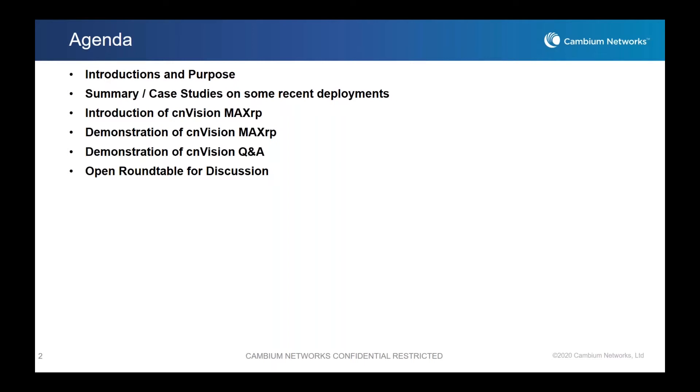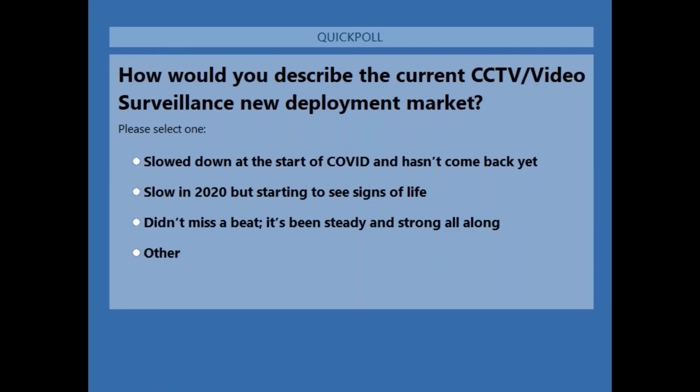I am going to start with a couple of poll questions just to get a sense of where everyone's at. Really trying to understand what your view of the current video surveillance marketplace is. I'd like to see what your thoughts are on how the video surveillance market has been going — doesn't have to be wireless, doesn't have to be CNVision, but in general how things have been going since the beginning of 2020 when COVID and the economy took the hit that it did.